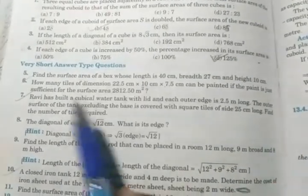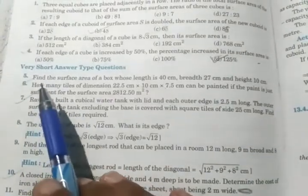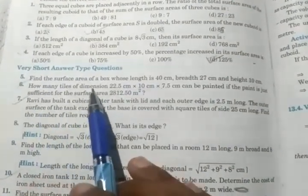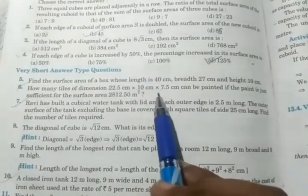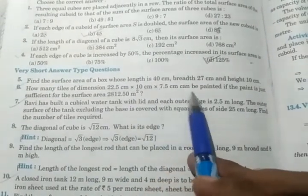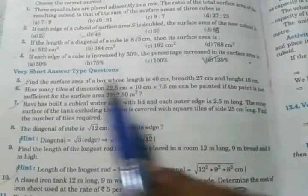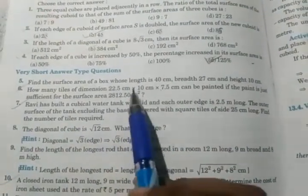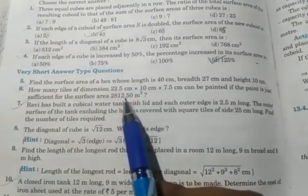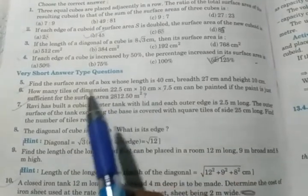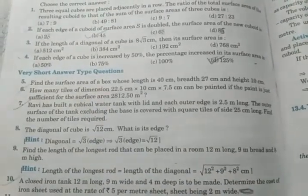So the first question that we are going to discuss is question number six. The question says how many tiles of dimension 22.5 cm × 10 cm × 7.5 cm can be painted if the paint is just sufficient for this surface area. So you can paint this much as you have the tiles and the dimension is given to you. First we are going to start with the surface area.